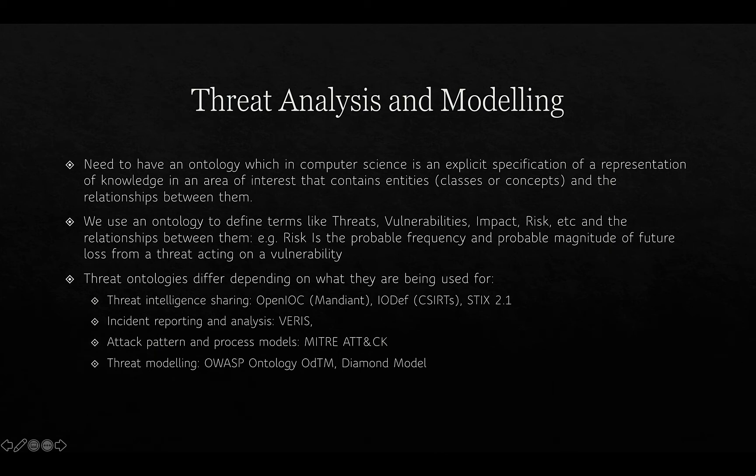To understand the threats facing an organisation, we undertake threat analysis and modelling. To do that, we need some way of expressing the concepts we're talking about — such as threats, threat actors, threat actions, incidents, etc. We do that using an ontology, which is simply a way of specifying the objects or concepts and the relationships between them. We use the ontology to define terms like threats, vulnerabilities, impact, risk, etc., and then the relationship between them. For example, risk is the probable frequency and probable magnitude of future loss from a threat acting on a vulnerability.